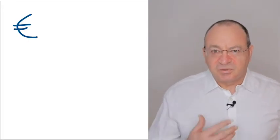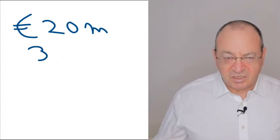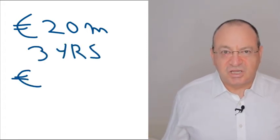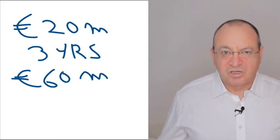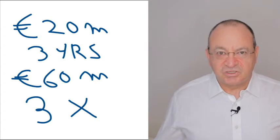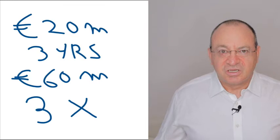A very simple example: if I invest 20 million euros in year zero, hold this investment for three years, and sell this investment for 60 million euros after three years, my money multiple is simply 60 divided by 20, which is 3.